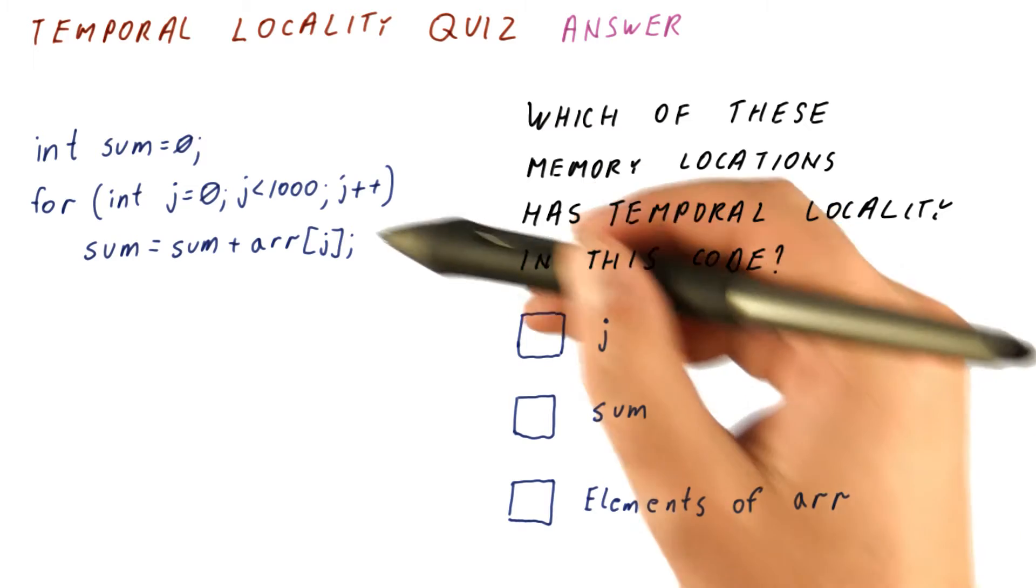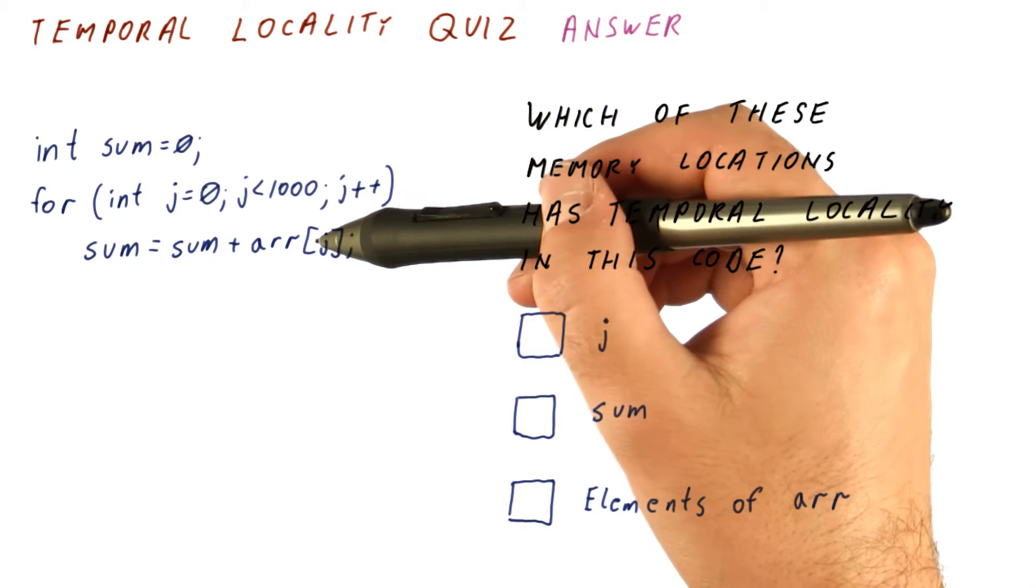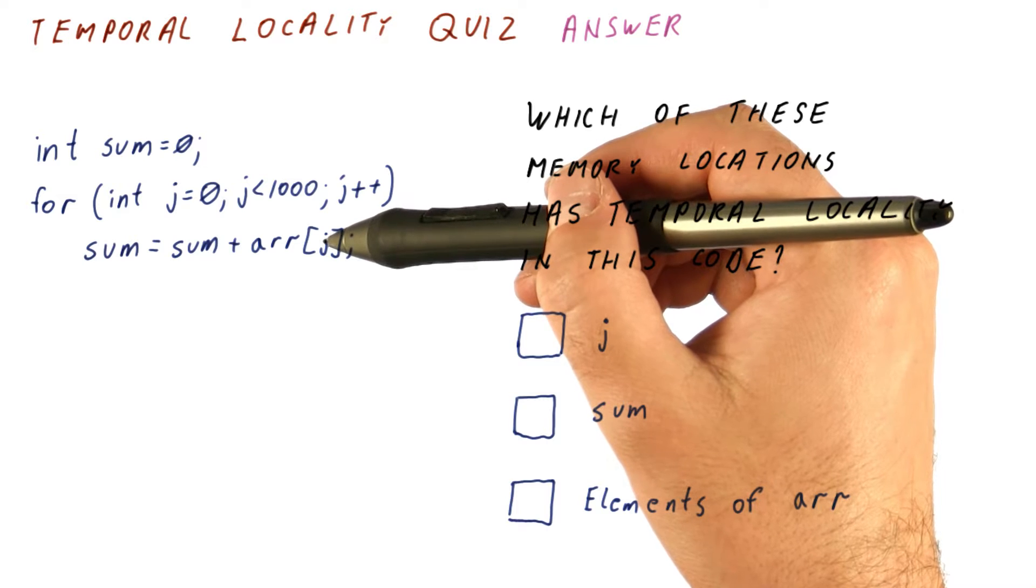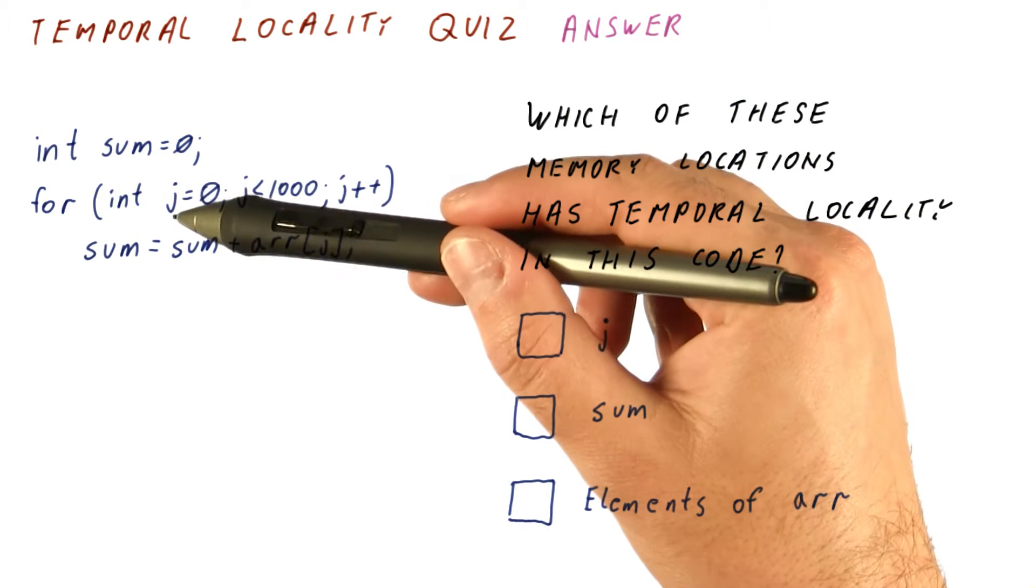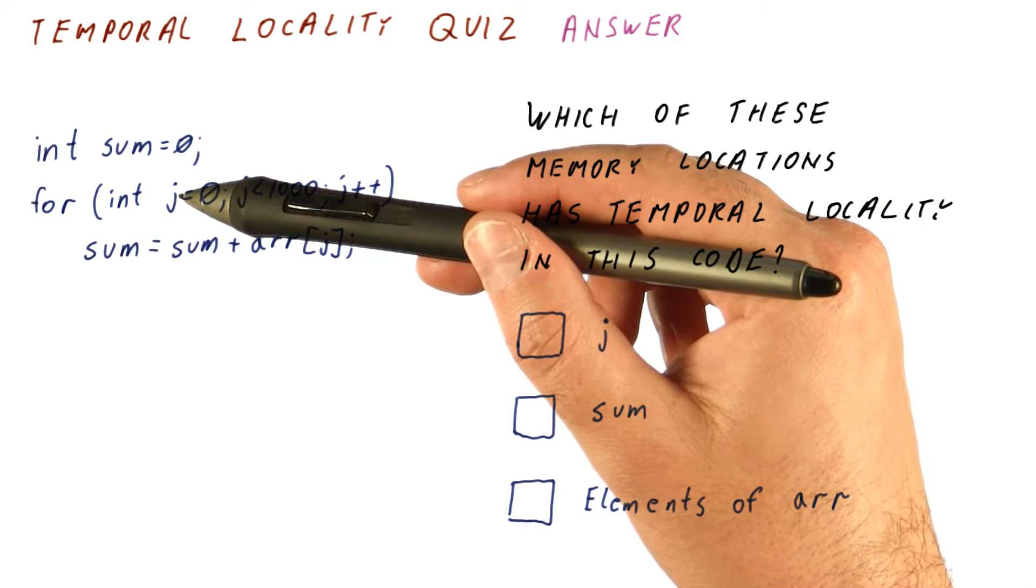For the variable j, this is true. We're using it here, here, here, in every iteration of the loop. So the first time we access it, if we conclude that it will be accessed again soon, we would be right.